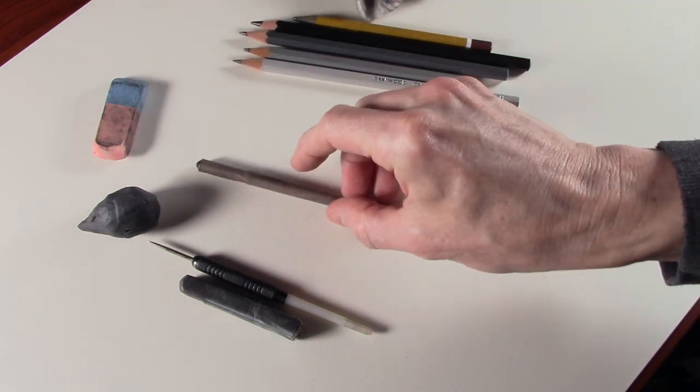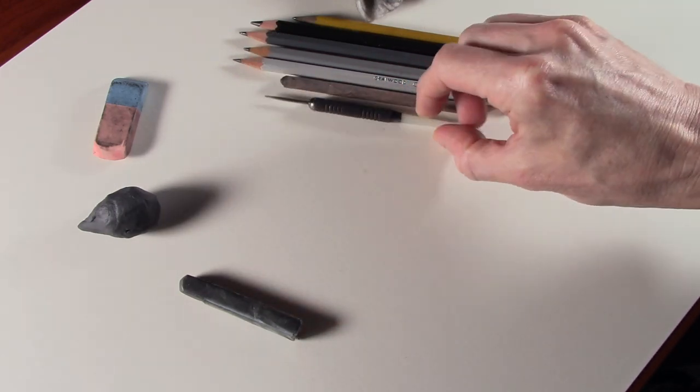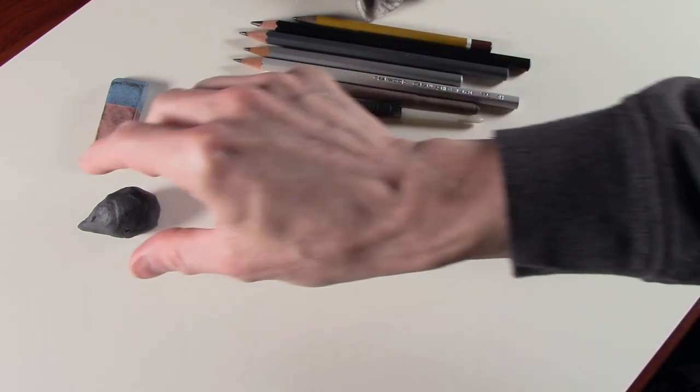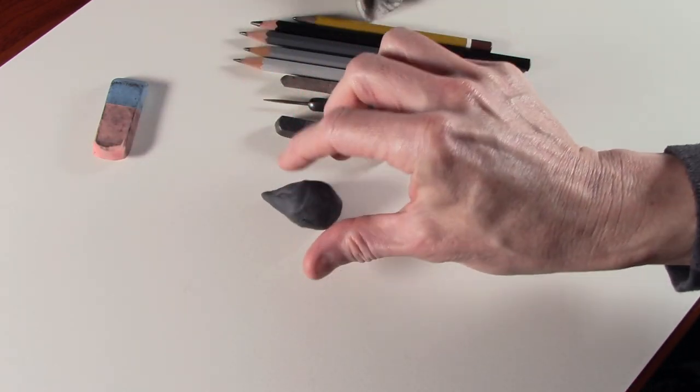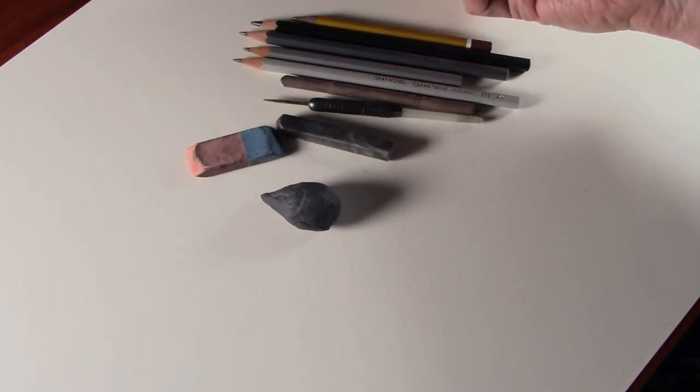I also have a blending stump, a dart, a graphite block, a putty rubber, a normal eraser and also some cotton wool.